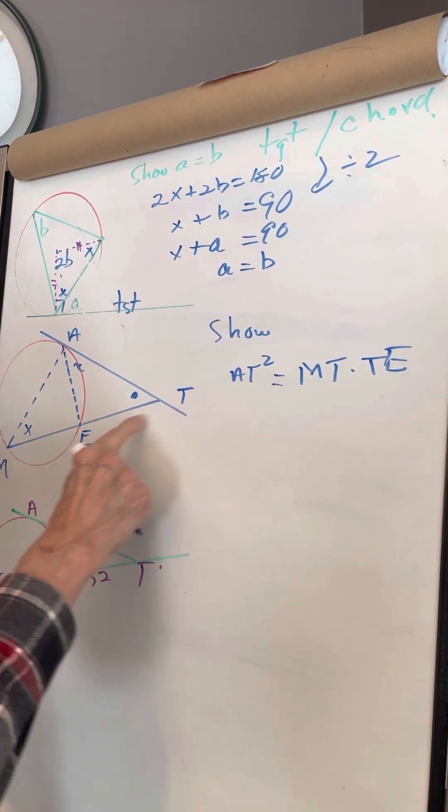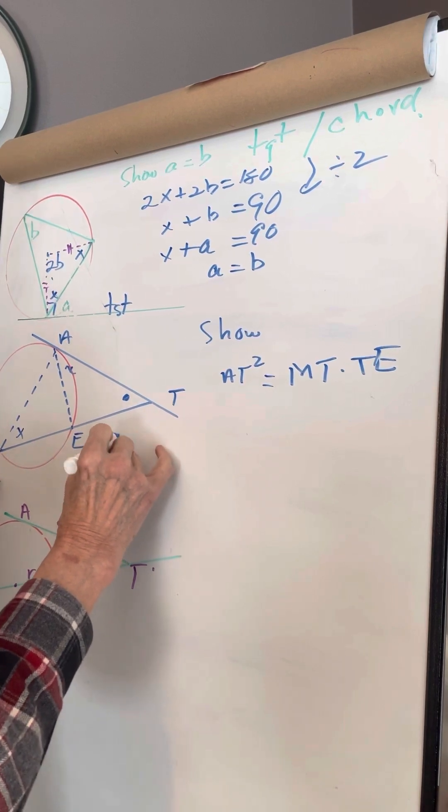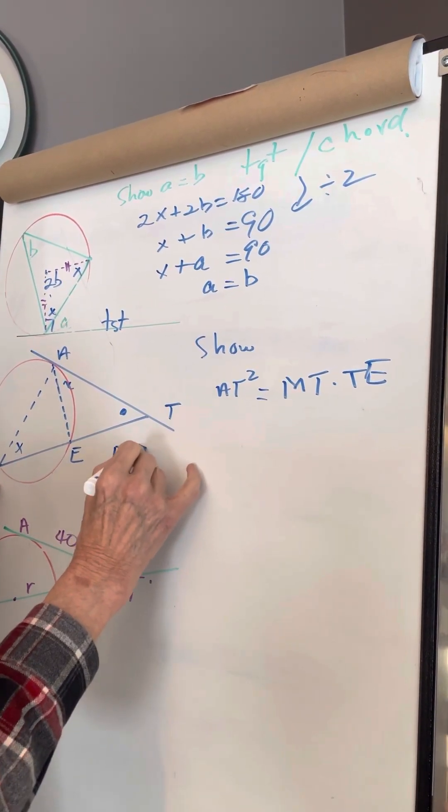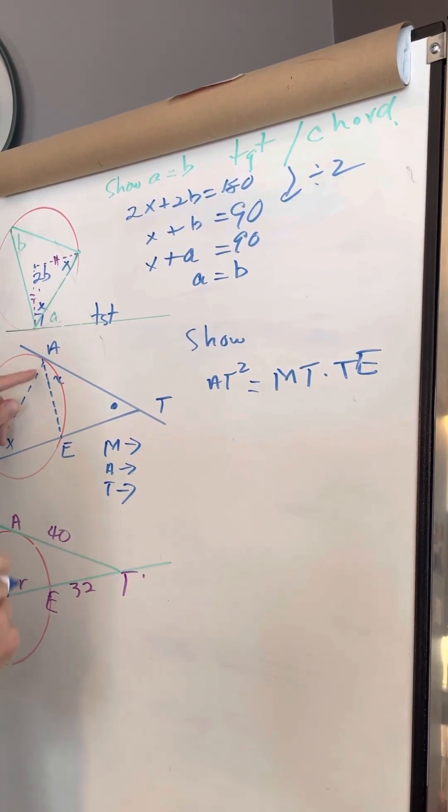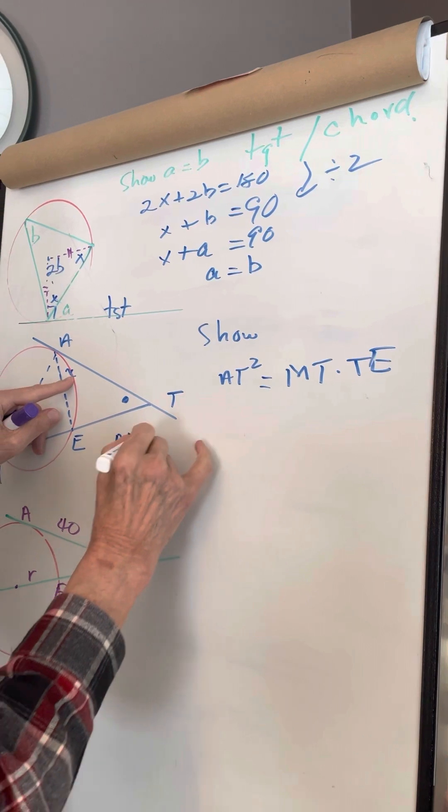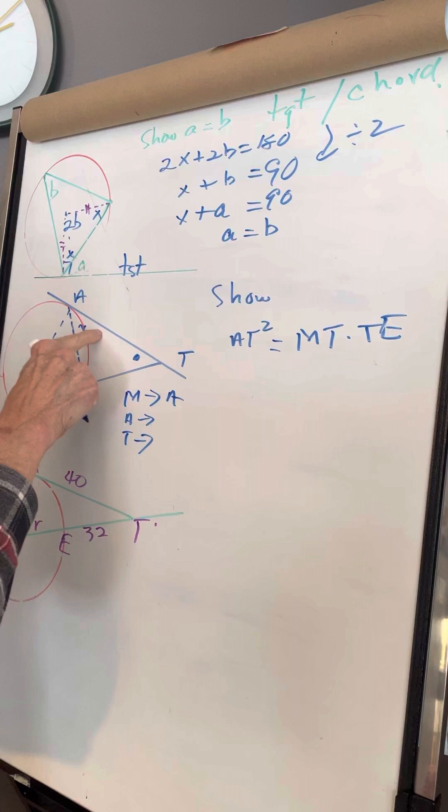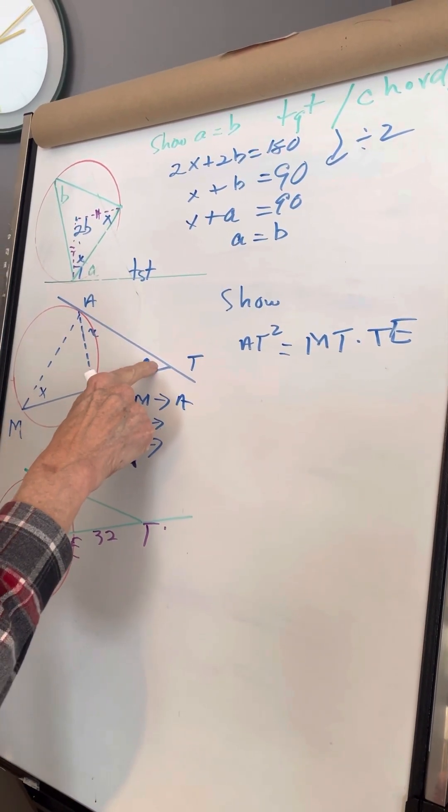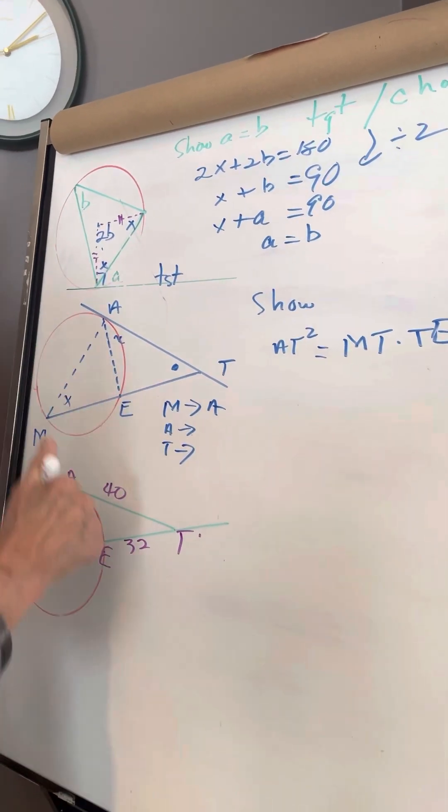Okay, so first, I'm going to look at triangle MAT. Angle M in the big triangle equals angle A in the small triangle. Angle A in the big triangle equals angle A in the small triangle. T belongs to the big triangle and to the small triangle.